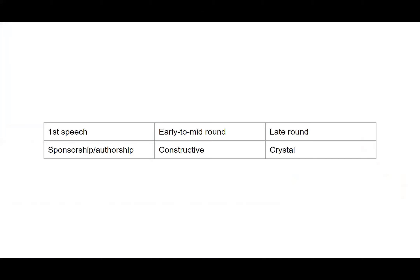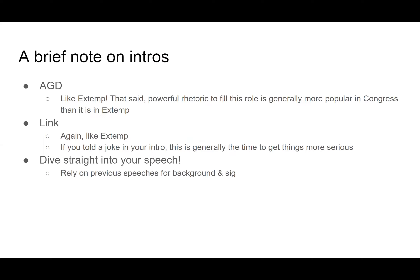First, as a brief roadmap, I'm going to talk about speeches in chronological order of how they're generally given in the round. We're going to start with the first speech of the round, usually known as the sponsorship, move on to constructives, which encompass most of the round and are generally the most important, and then touch on late-round speeches, which are also known as crystals.